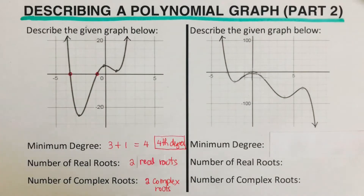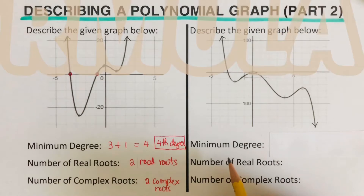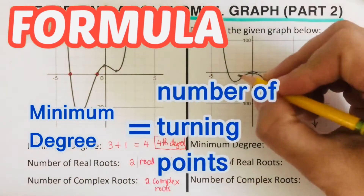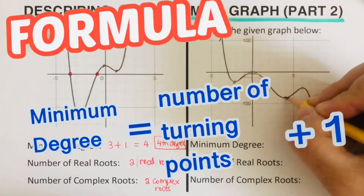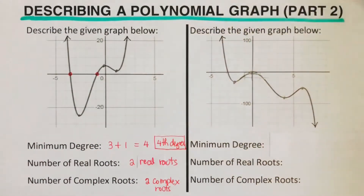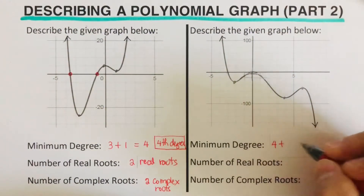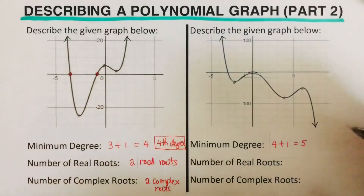Now let's go over the second problem. To find the minimum degree, we count the number of turning points plus one. In this problem we have one, two, three, and four turning points. So that's four plus one equals five — this is a fifth-degree polynomial.